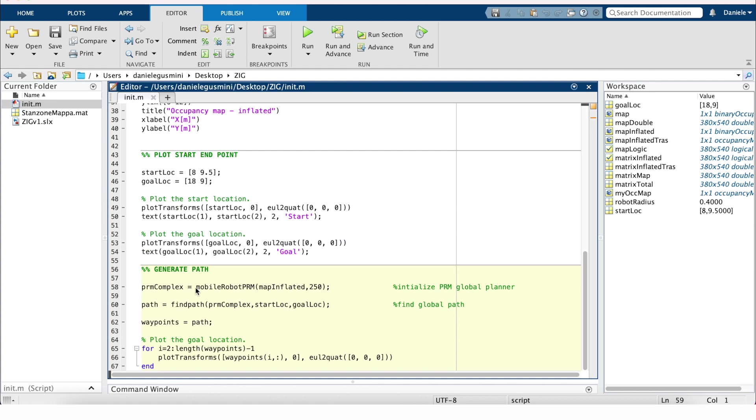How to generate this path? It is actually very simple. We simply create a mobile robot PRM object that works on the map inflated with a density of 250. After that, this creates the graph. This is the starting point of the generation of the graph. In the second phase, this is the query. We find the path of this object PRM between a starting location and goal location. Finally, I simply change the name of the variable from path to waypoints and plot the waypoints on the map. So we can simply run the section.